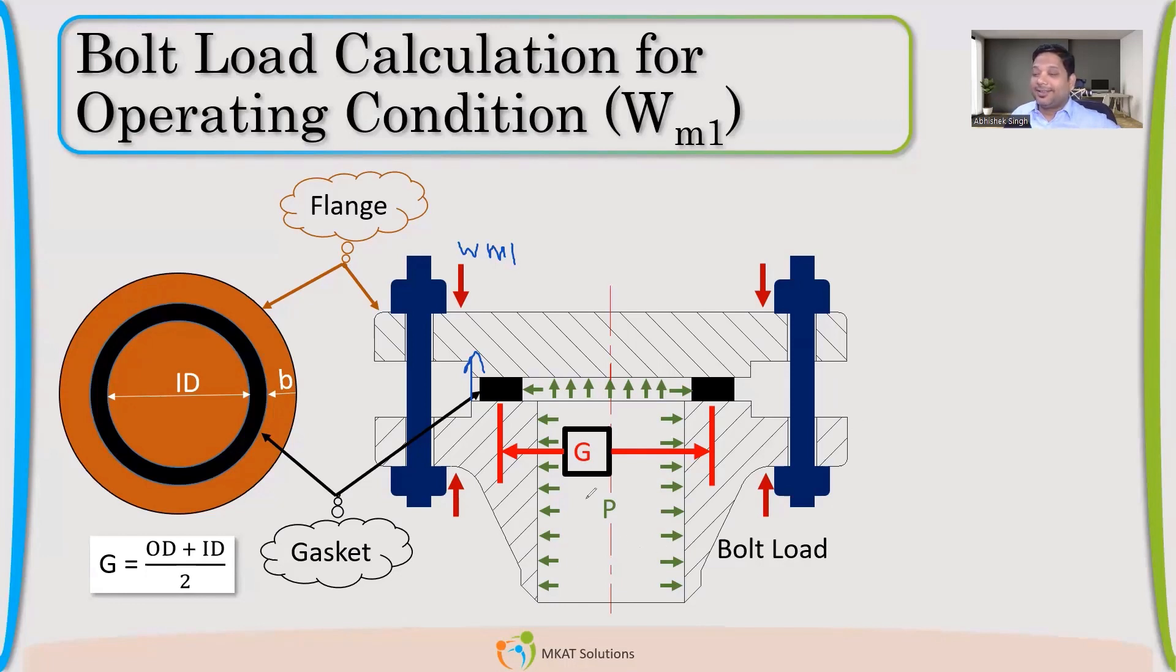So now, why there are so many different values? First of all, see, what is trying to separate these two parts? It's pressure. The pressure is applied and it is trying to separate these two. The bolt is trying to keep them together. So if I am able to find the pressure, how much force pressure is applying, how I'll get that? If I multiply that pressure into the area on which it is acting, then I'll get the force. Any doubt in that? Pressure multiplied, whatever pressure is acting. I don't need area in this direction because that will give me force in this direction. I don't want that. I want the force acting in this direction.